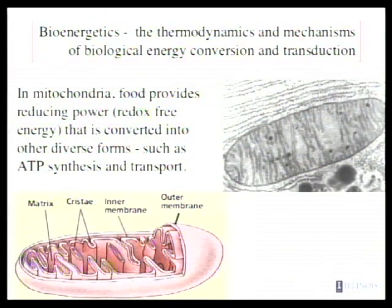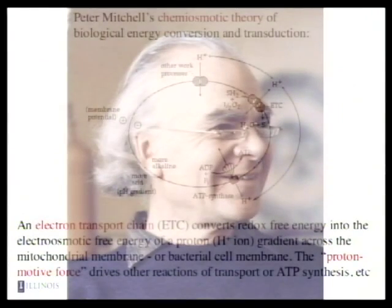In mitochondria, the energy comes in in the form of food, and the process there is to convert the inherent free energy, which is bound up in specific kinds of electrons involved that are accessible through oxidation reduction reactions, and to convert that into these other diverse forms.